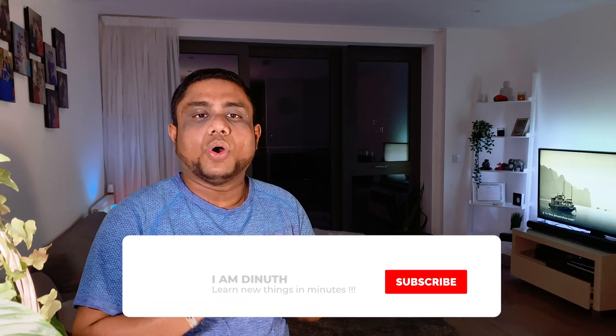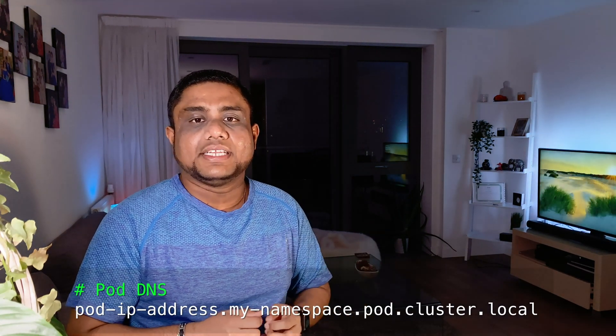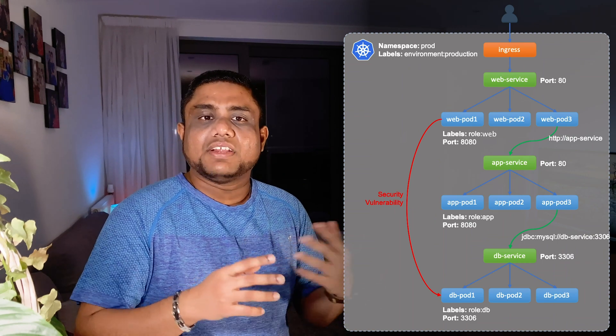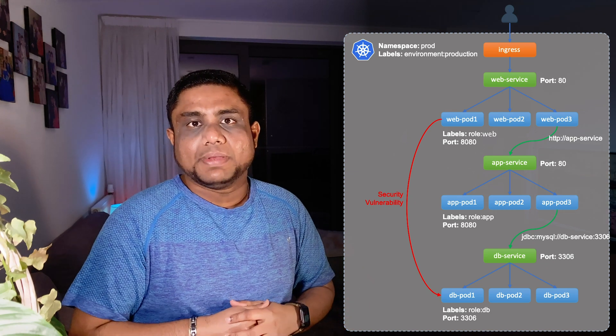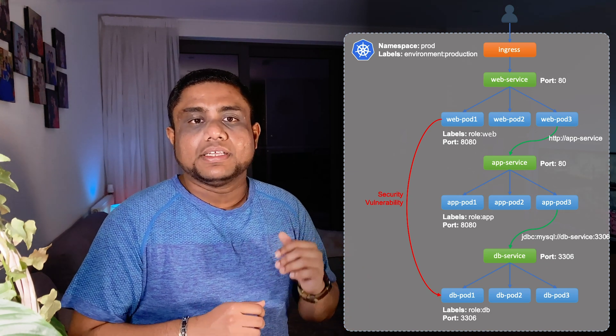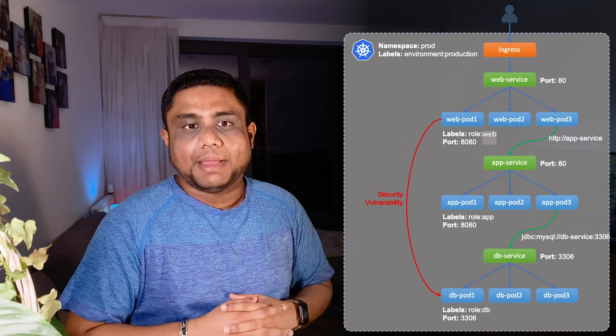Now let's discuss networking policies. Kubernetes has an all-allowed networking rule by default, so pods in all nodes and all namespaces can communicate with each other without configuring any routes, using IP addresses, pod DNS names, or services. When you have a multi-tier application with a web tier, app tier, and database tier, having this kind of open network connectivity between all tiers is not a good security practice.